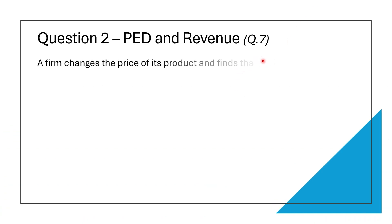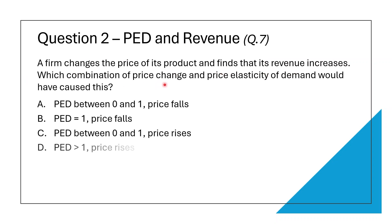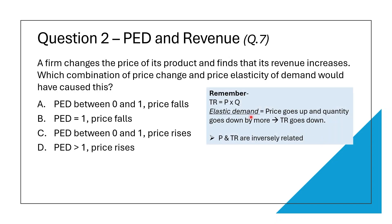This is question seven from the paper. A firm changes the price of its product and finds that its revenue increases. Which combination of price change and price elasticity of demand would have caused this? Let us quickly recap the related concepts. Remember that total revenue equals price times quantity.